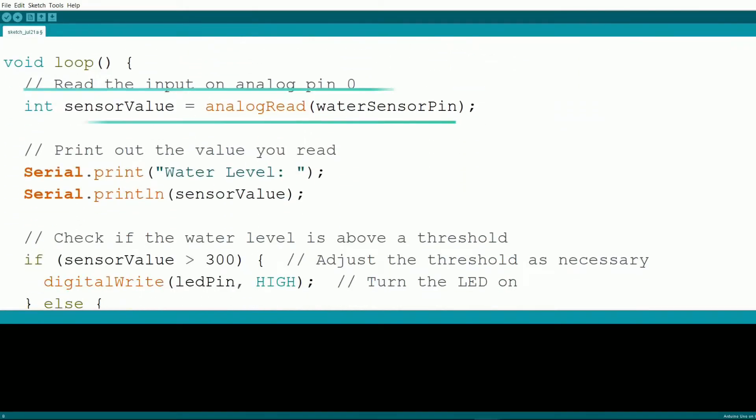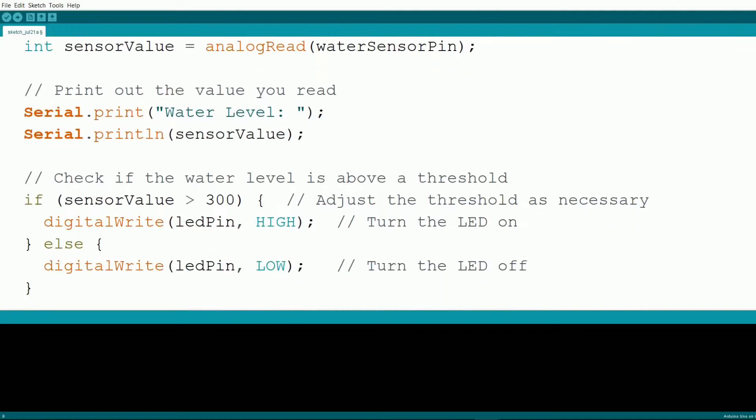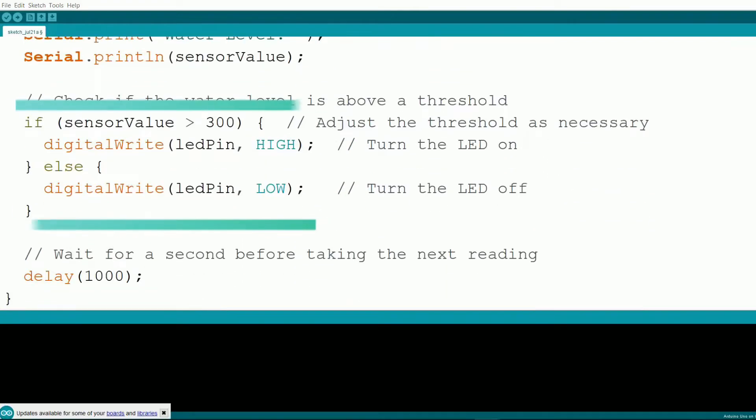In the loop function, we start by reading the sensor value from the water level sensor. We then print this value to the serial monitor for easy debugging and monitoring. Next, we check if the sensor value is above a certain threshold. In this case, 300. If it is, we turn the LED on. If not, we turn the LED off.